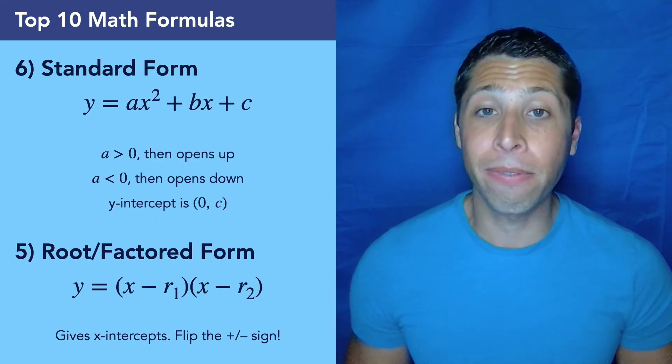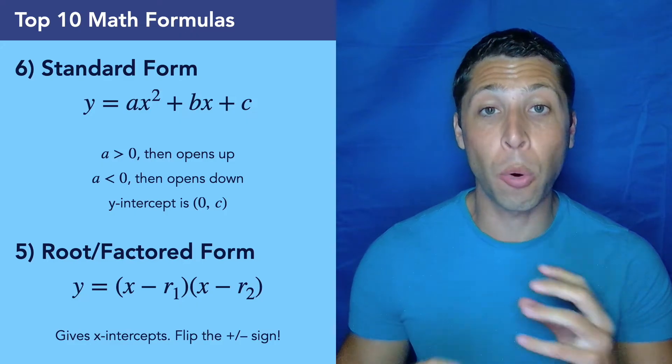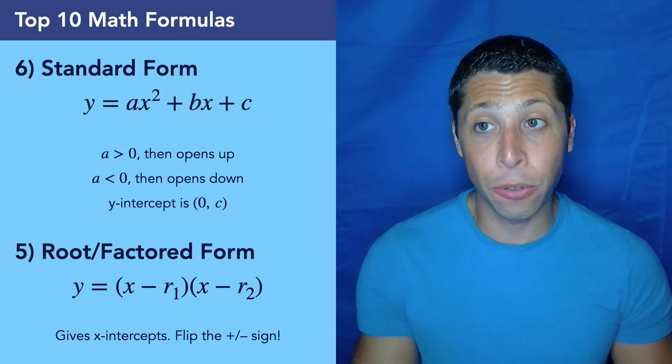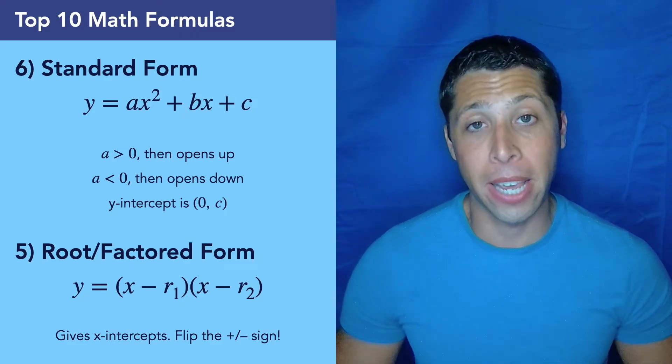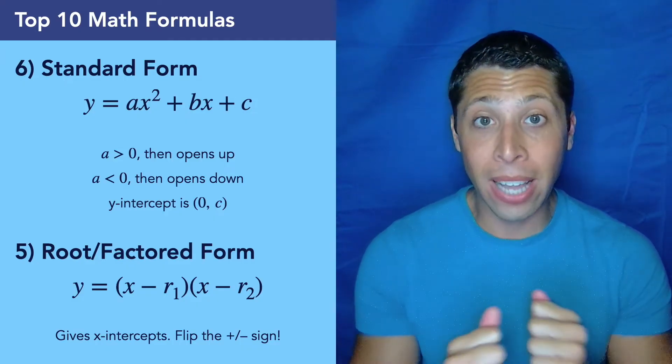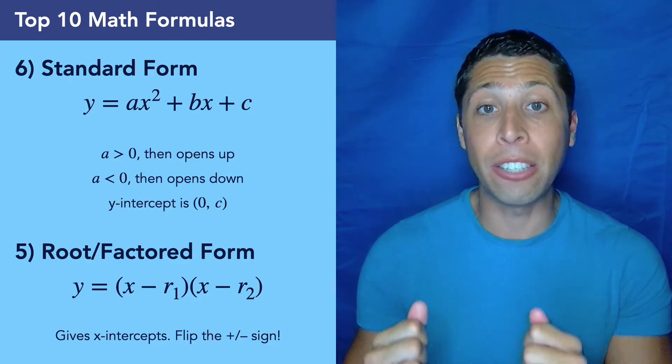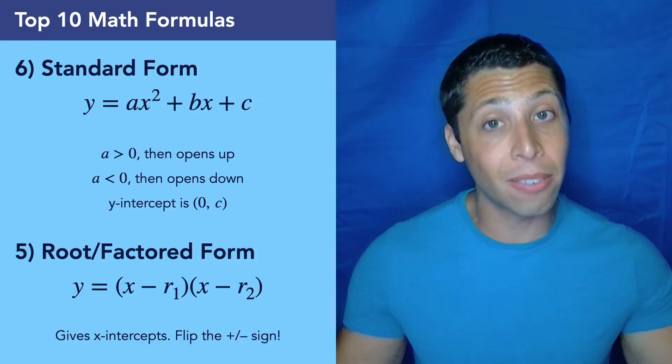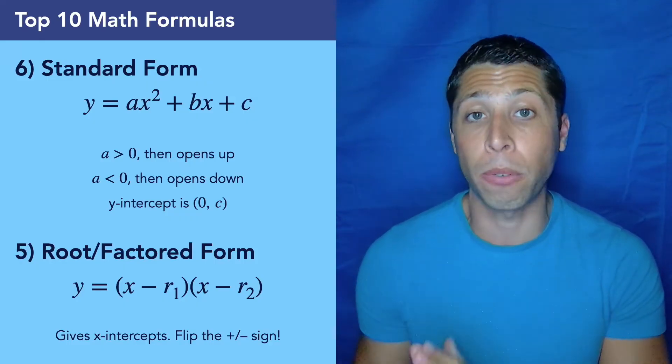Let's take a look at numbers six and five. They're linked. They are both versions of quadratic equations. We have the standard form, y equals ax squared plus bx plus c, and the root or factored form. And we move between these a lot. That's why they're on the same slide here. We both need to factor and FOIL for lots of questions in the SAT. So these are really important formulas.